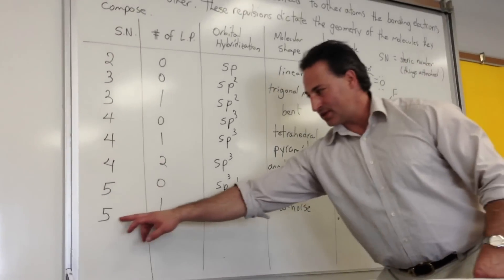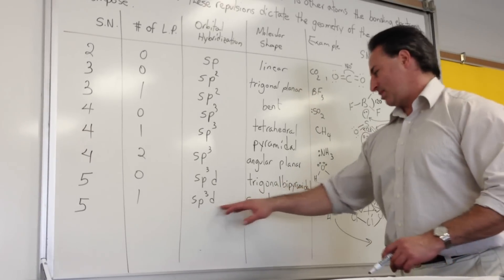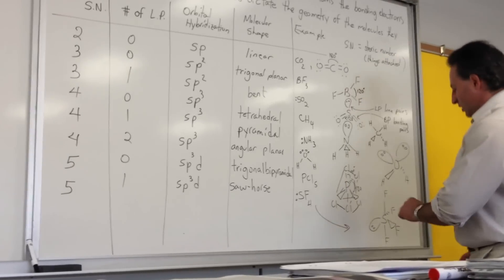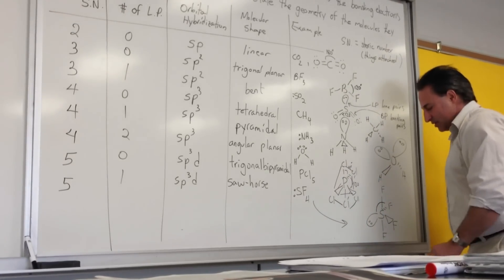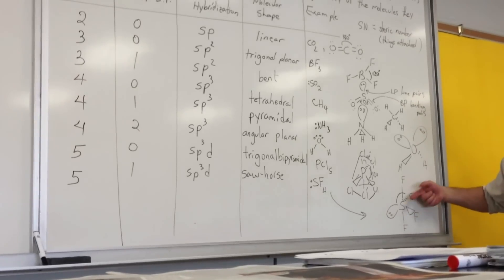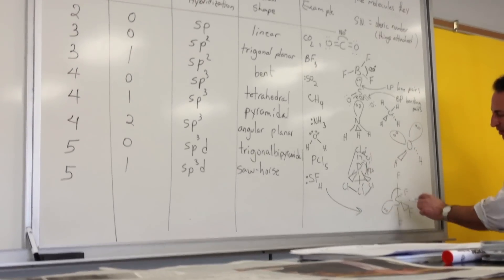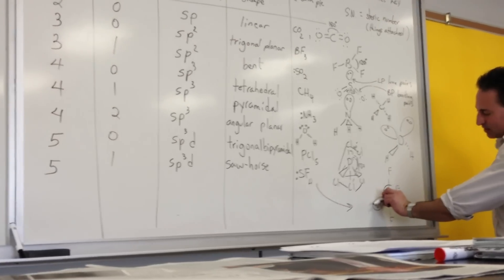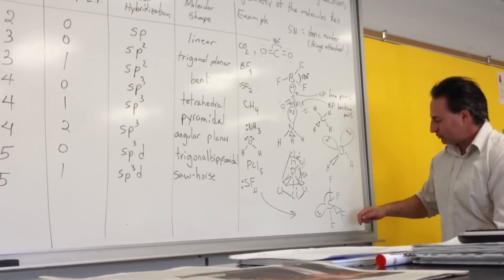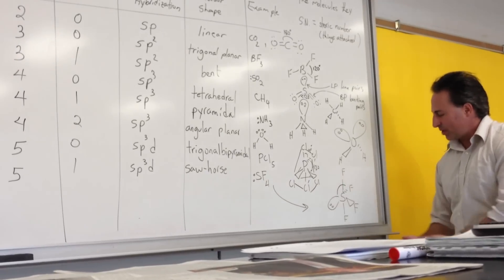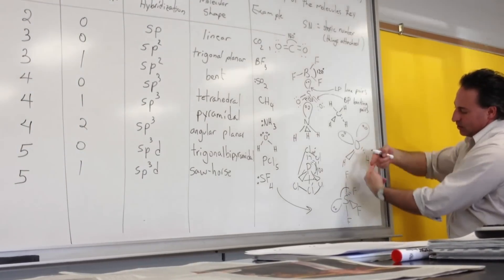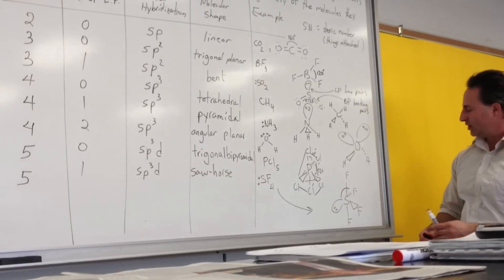If five things are attached to the central atom with one of them being a lone pair, it's SP3D hybridized and looks like a sawhorse. The lone pair goes on the equatorial plane to maintain the 120-degree angle — the longest distance apart. In sulfur tetrafluoride, one fluorine goes up and one goes down. Because you don't see the lone pair, the molecule looks like a seesaw.